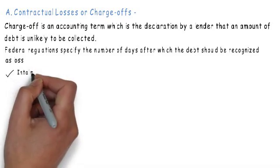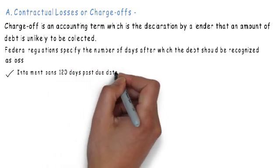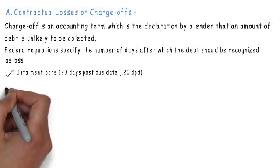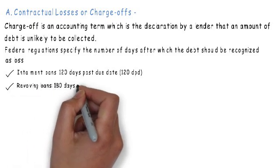For installment loans like mortgage and auto loans, a loan is considered as a loss if payment is not received for 120 days after the due date. In case of revolving loans like credit cards, the time window specified is 180 days.